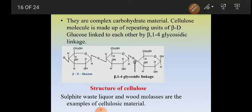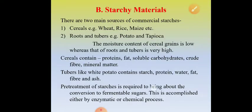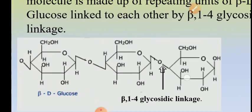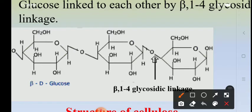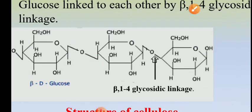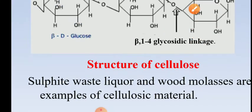Repeating units of beta-D-glucose molecules joined to each other by beta-1,4-glycosidic linkage represent cellulose. You can see here this is the beta-1,4-glycosidic linkage. Sulfite waste liqueur and wood molasses are the best examples of cellulosic materials used in production medium.